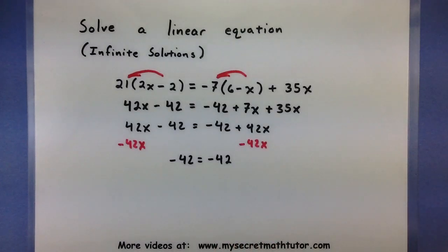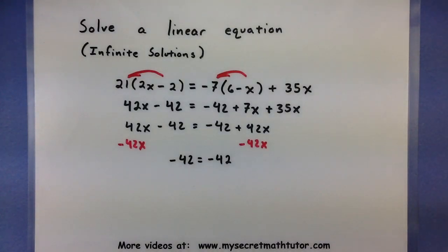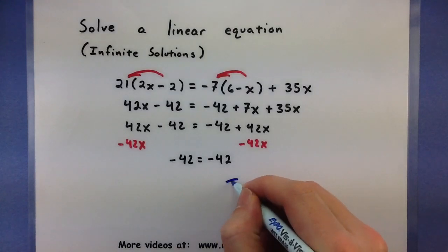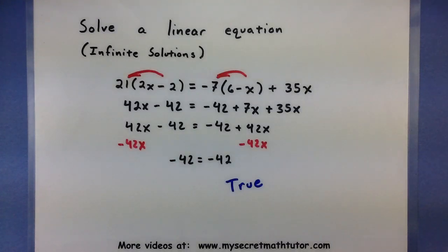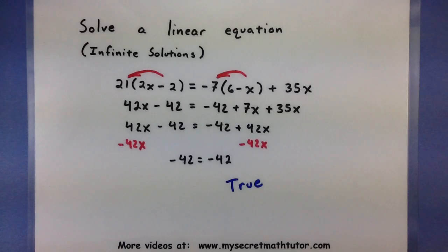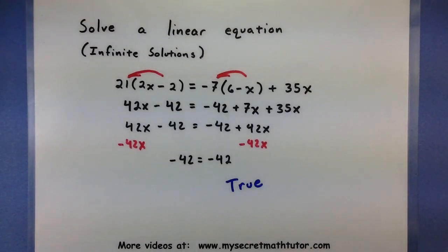This leaves us with just negative 42 equals negative 42. Now if that situation happens to you — all of your x's or variables are gone — double check your work to make sure you haven't made a mistake. If all of your steps are good, look at the statement that's left over. In this case, negative 42 does equal negative 42, so this is a true statement. That's my indication that I have an infinite amount of solutions, and that x could be any real number. Another term for this is you could call this type of equation an identity. Always be on the lookout for some of these more unusual cases, so that you know what you have.